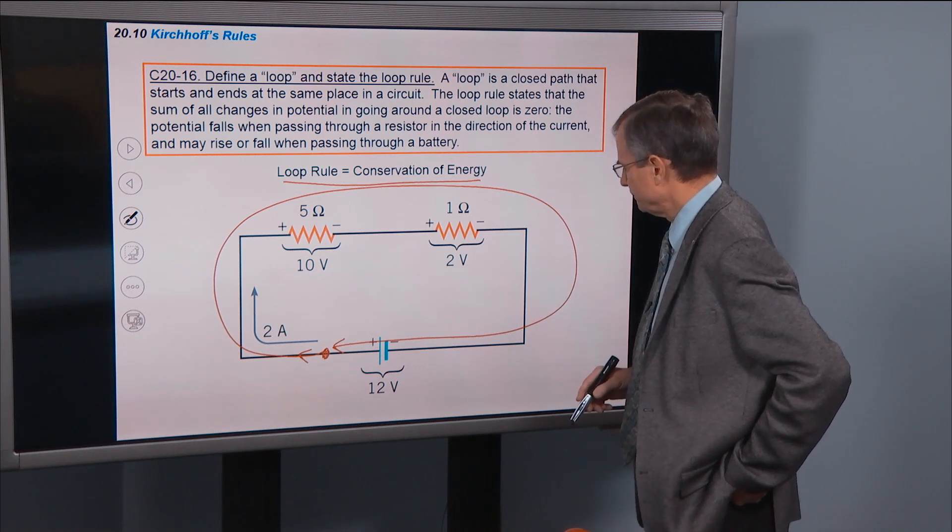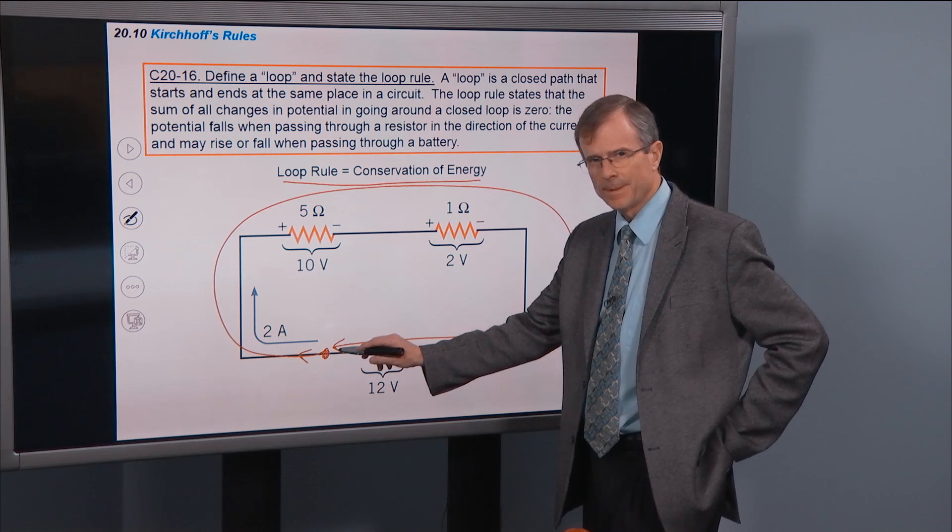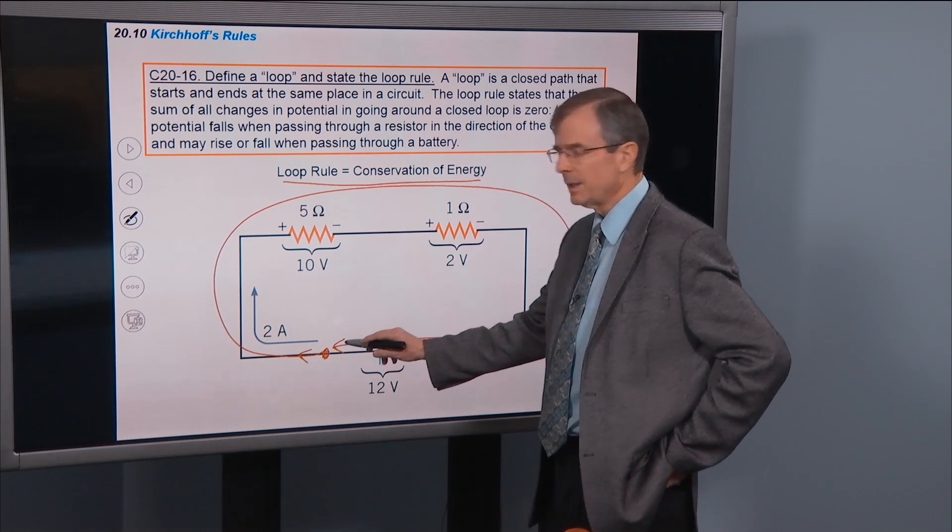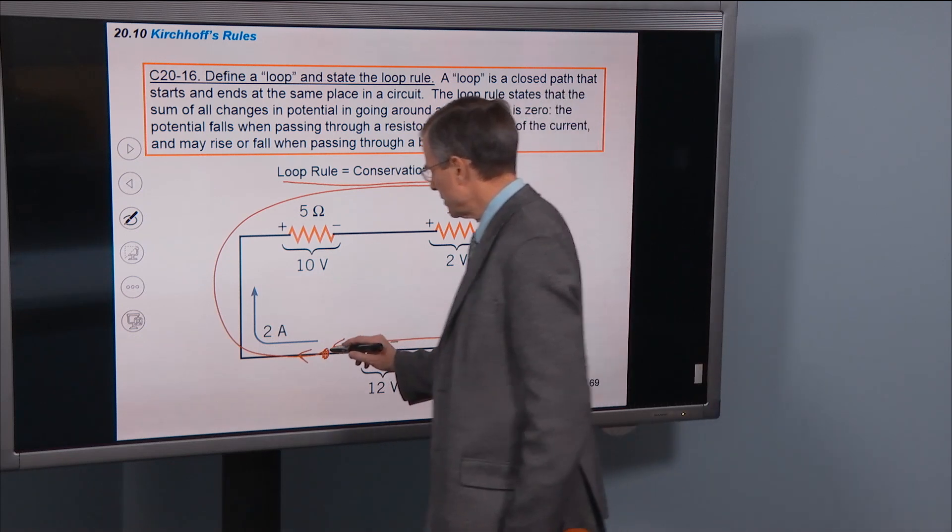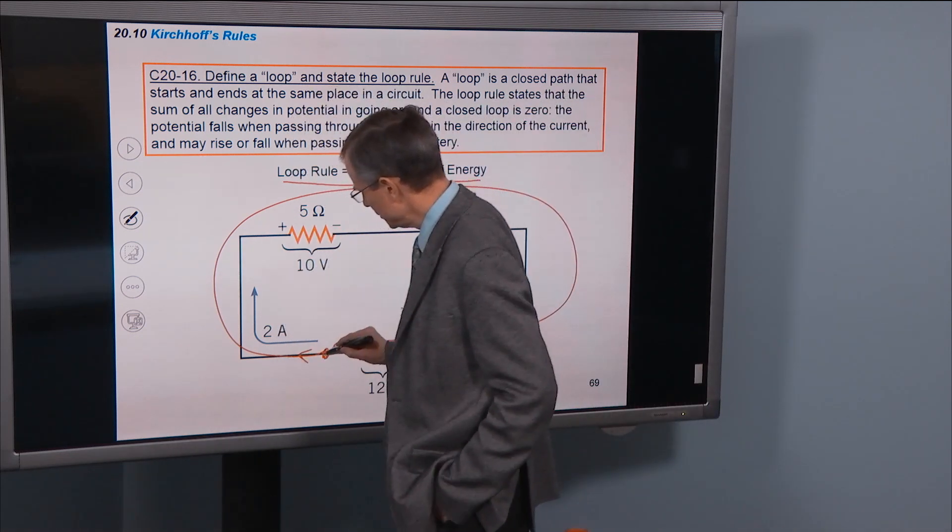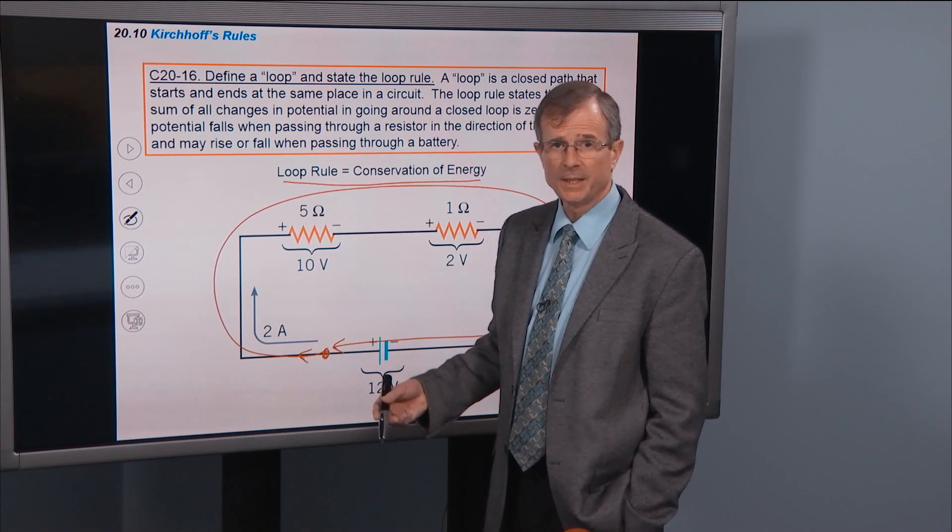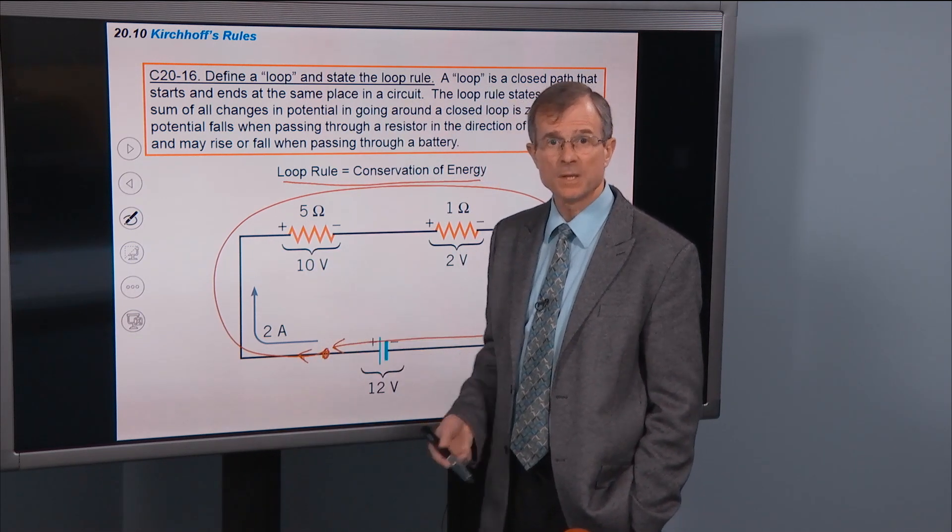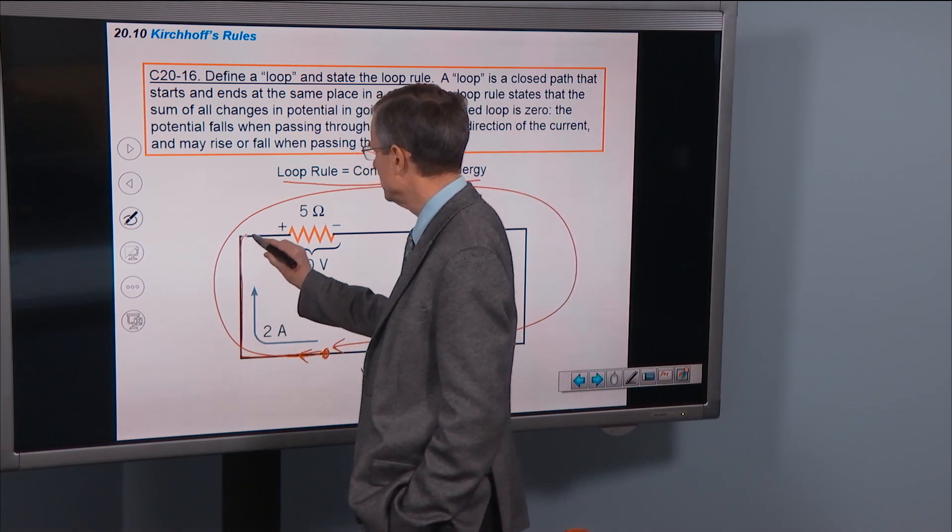If I'm going to start here and start adding up the changes in the electric potential, then I'm going to start here. How much is the potential change in going from here to here? You say, well, not at all because we're talking about a highly conducting wire. Potential stays the same. Potential is the same all the way along here. Same, same, same, same, same.